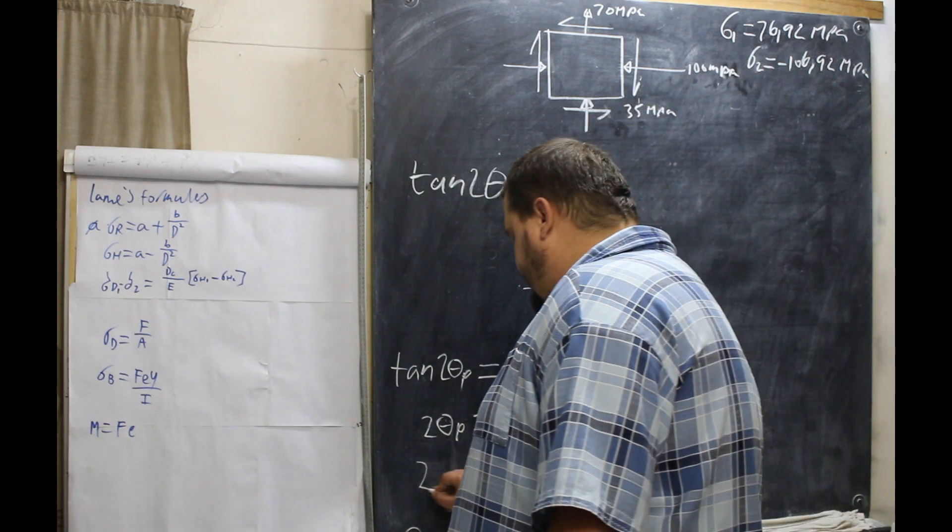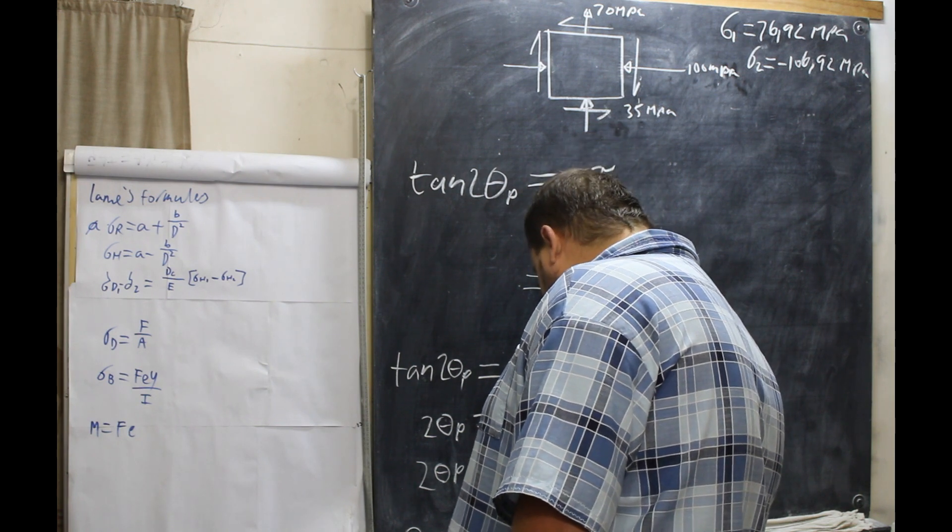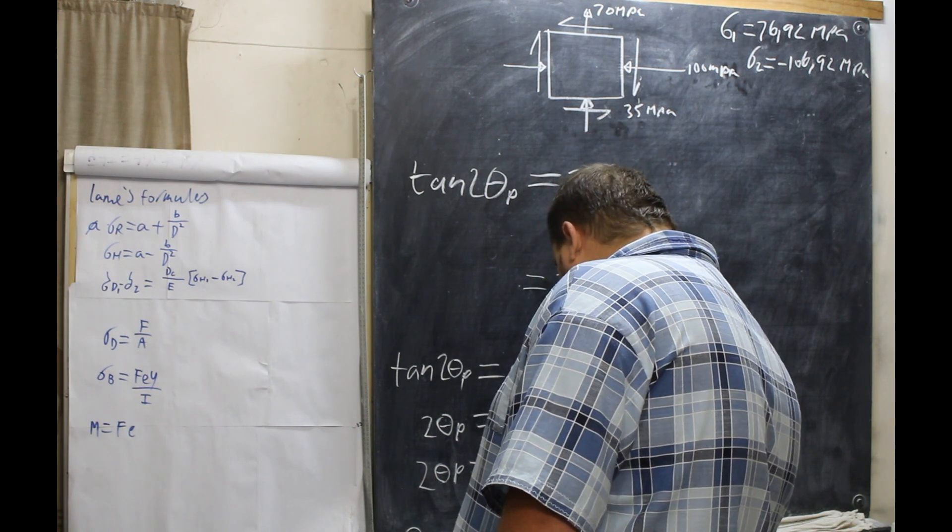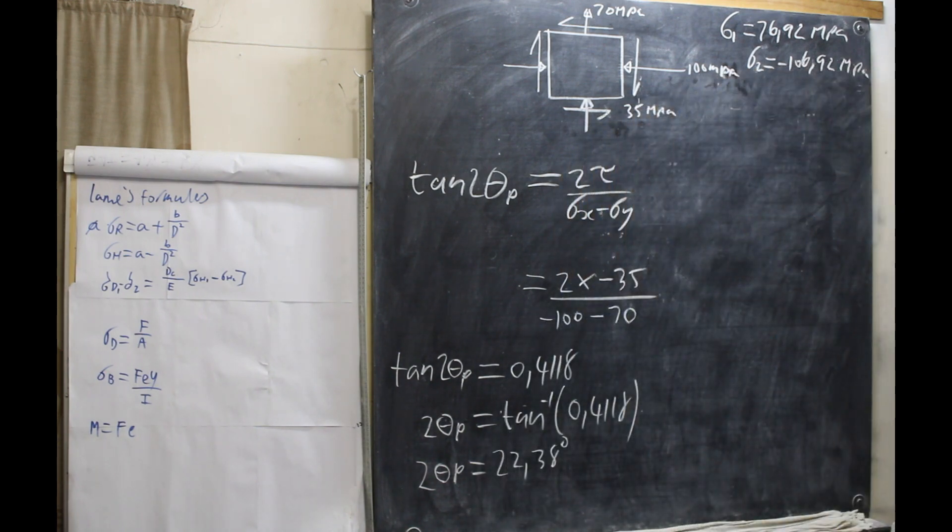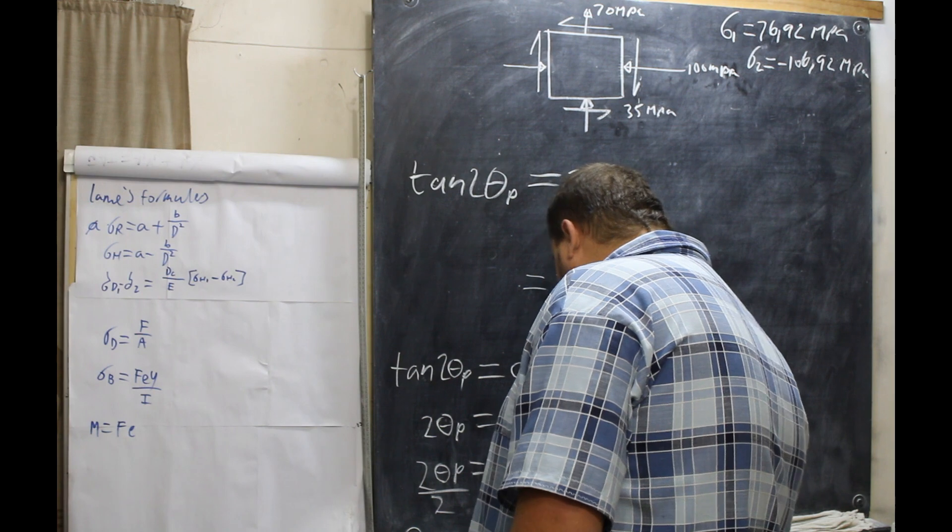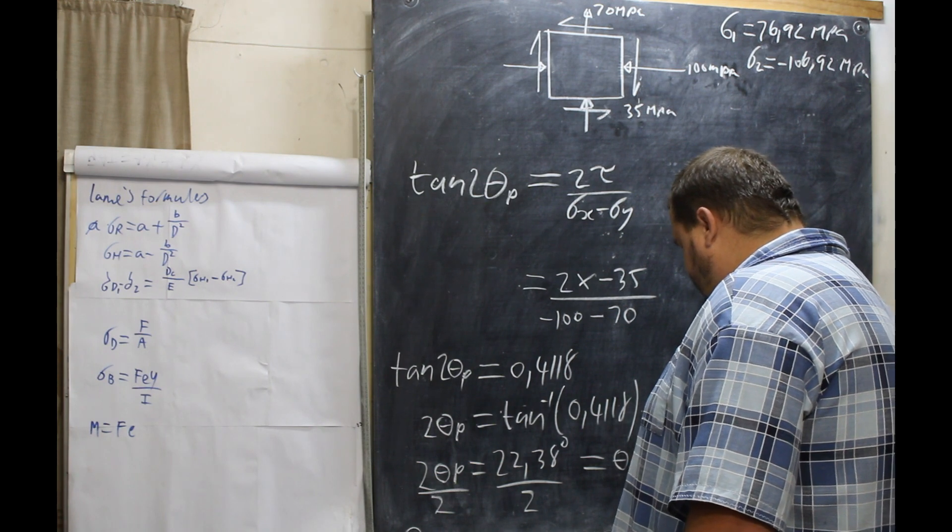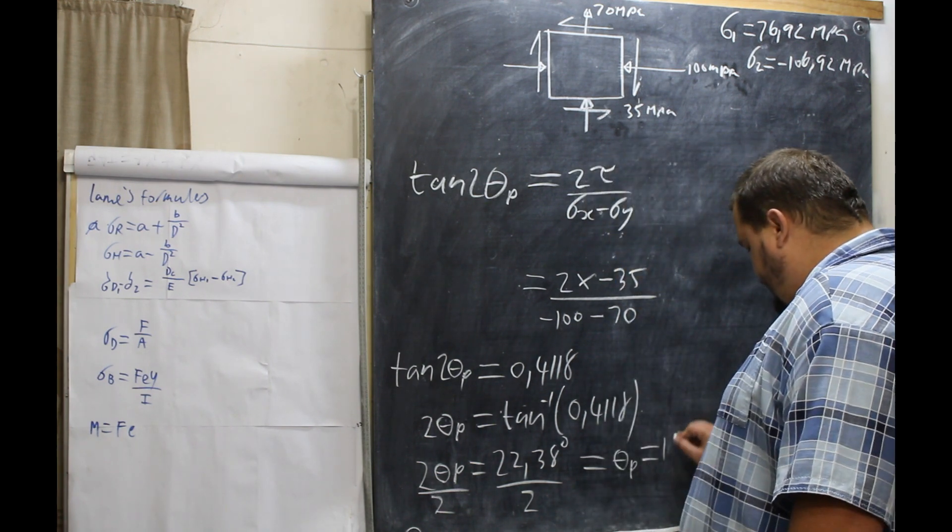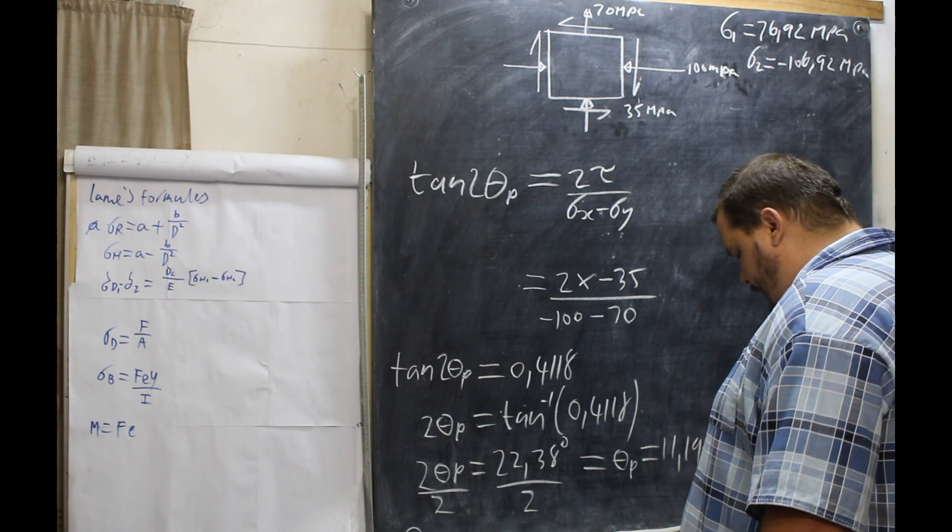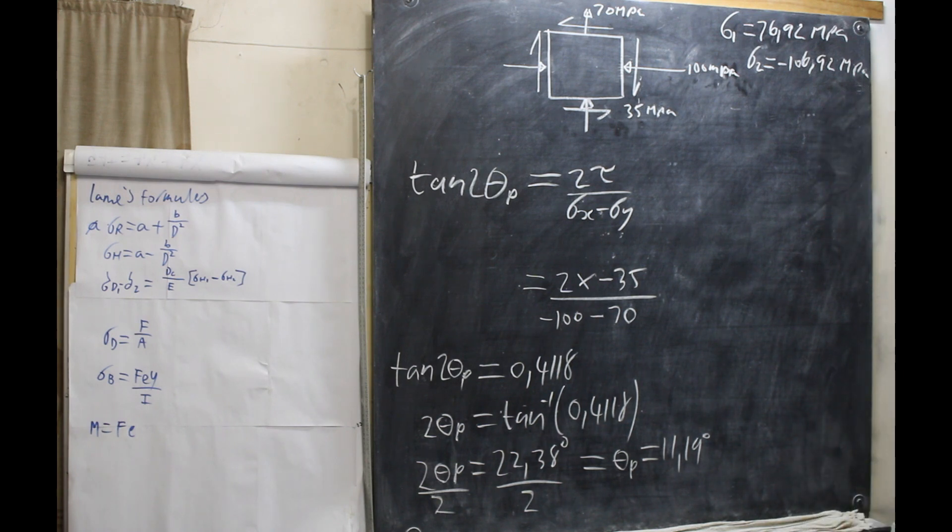That is 2. Now tan is 22.38 degrees. Now we divide by 2, divide by 2, divide by 2. We have θp is equal to 11.19 degrees. And we were looking for θp.